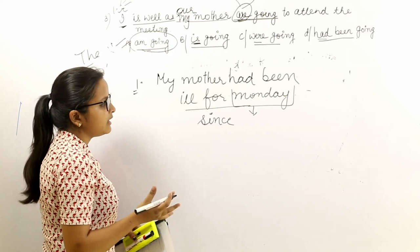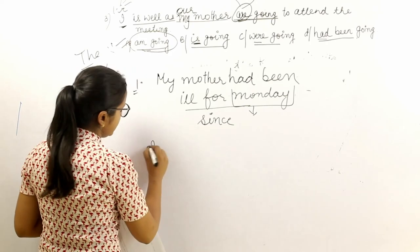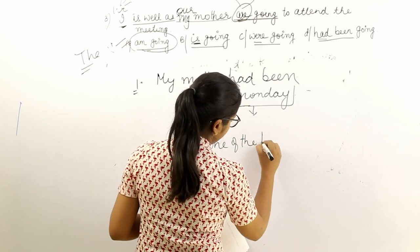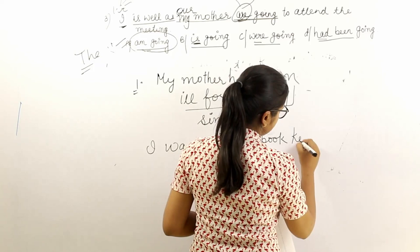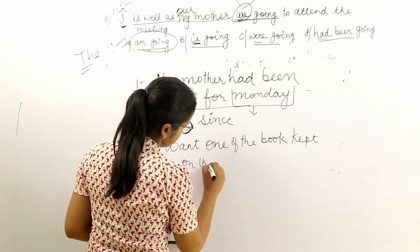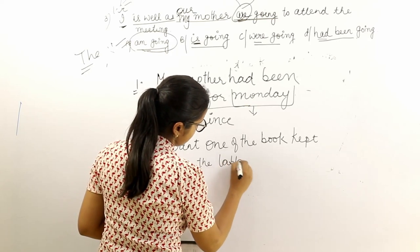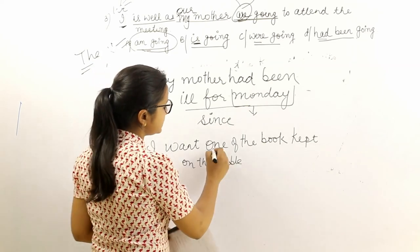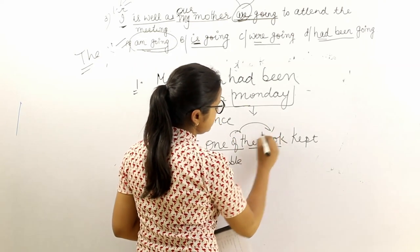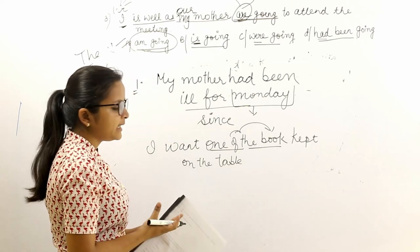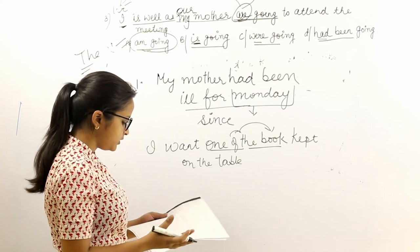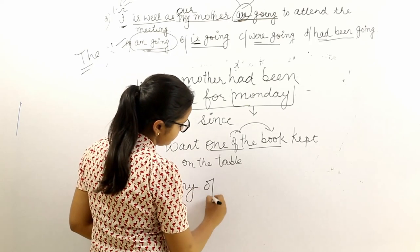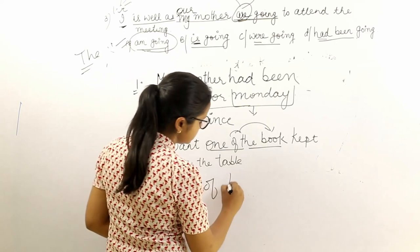Another example: 'I want one of the book kept on the table.' The rule is: when you use expressions like 'one of,' 'two of,' or 'three of,' the noun that follows 'of' must be plural. For example: 'one of the books,' 'many of the books,' 'three of the books.' This rule also applies to 'any of' — it should be 'any of the books,' not 'any of the book.'